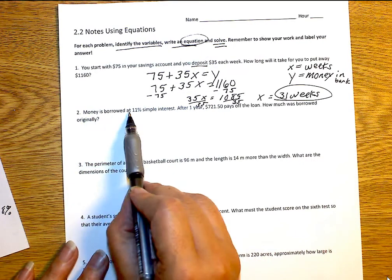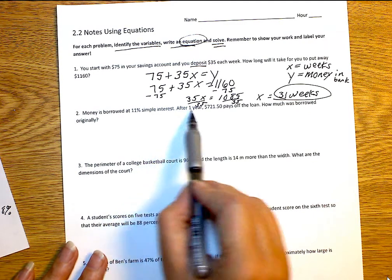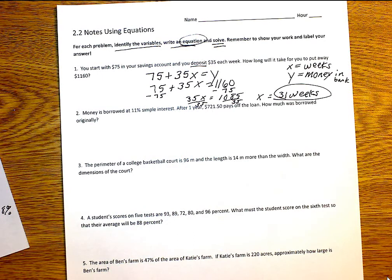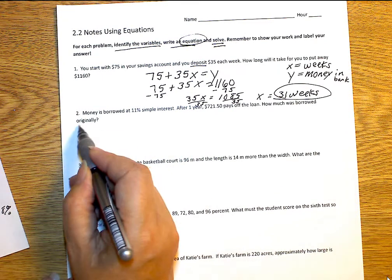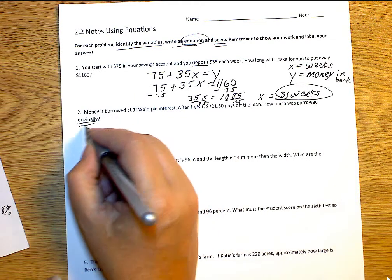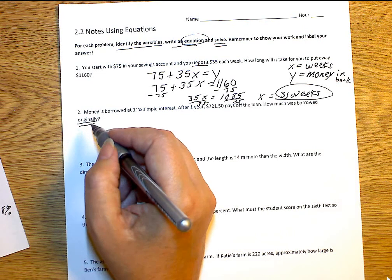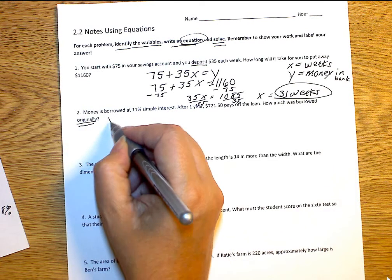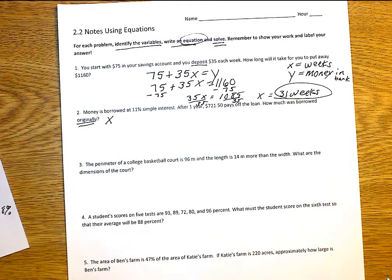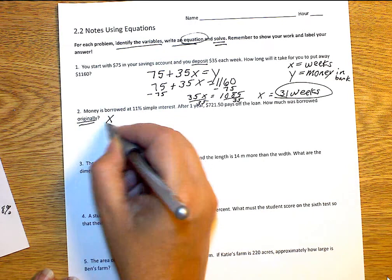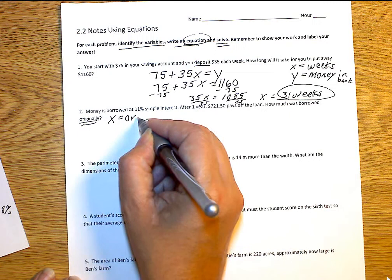Money is borrowed at 11% interest. And then after one year, after one year, $721.50 is paid on the loan and the loan is paid off. How much was the original loan? So, the original loan is our, what variable? What is that?